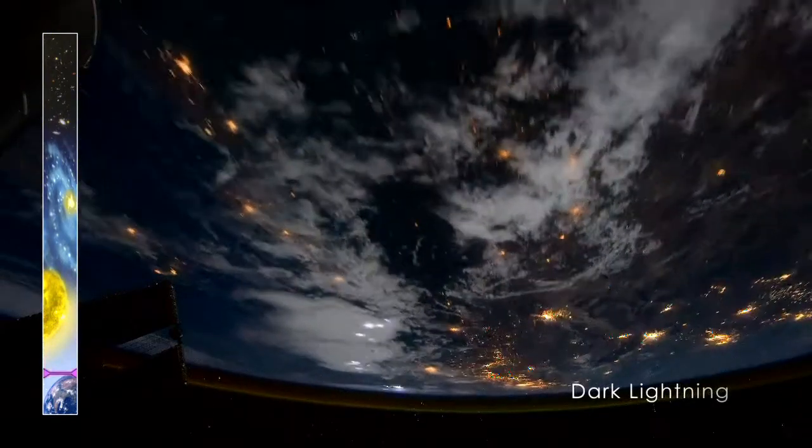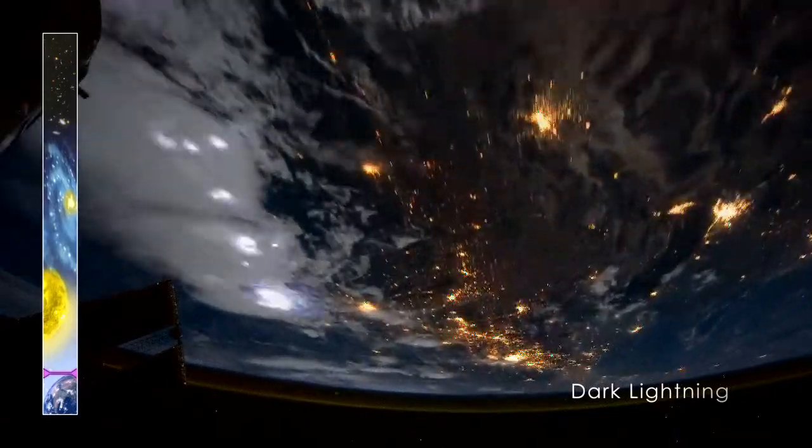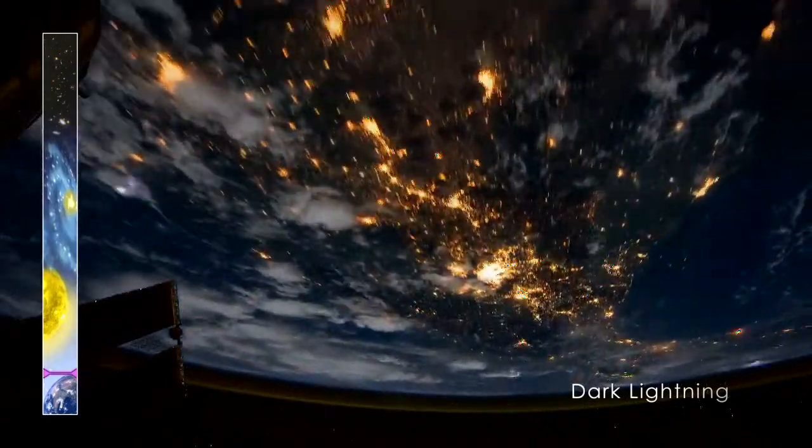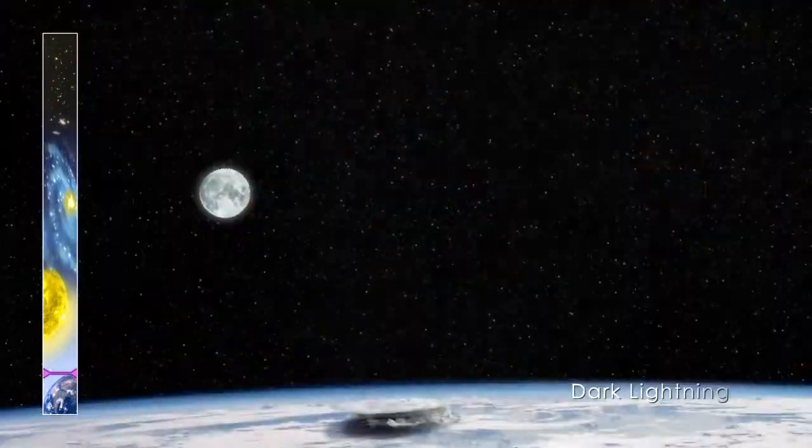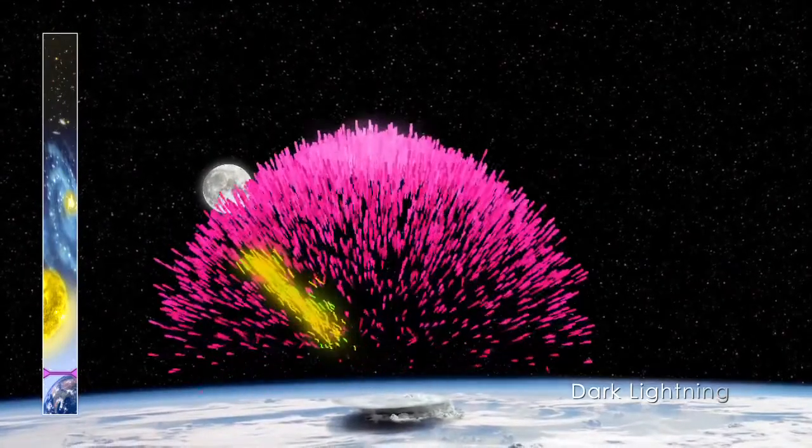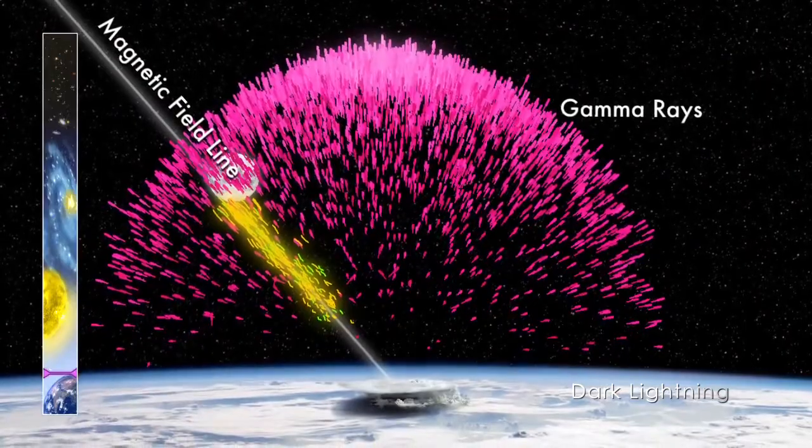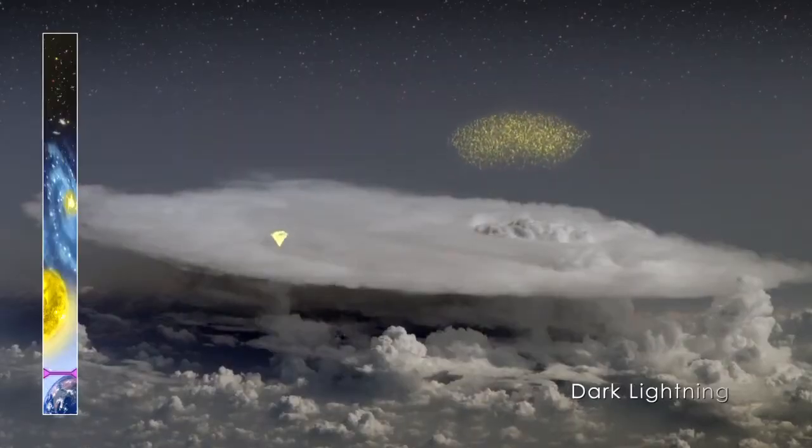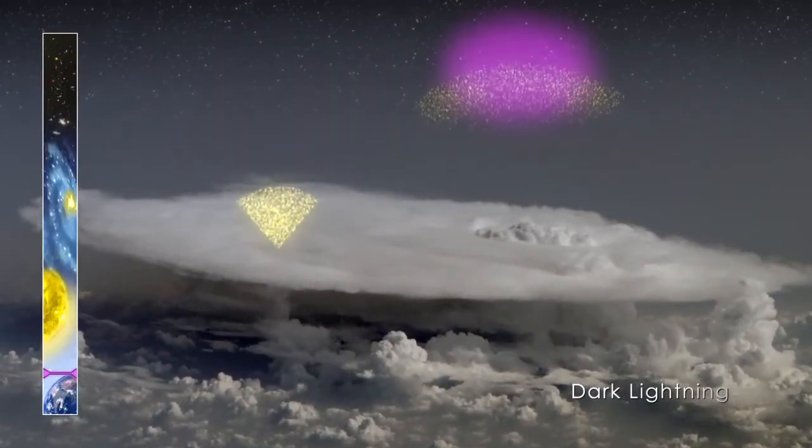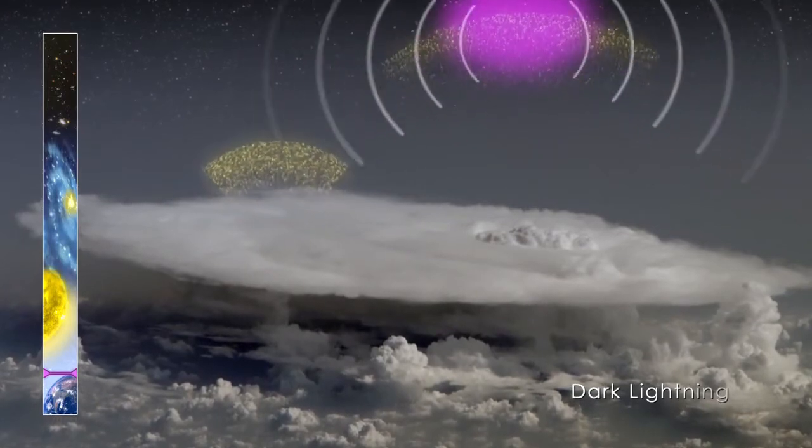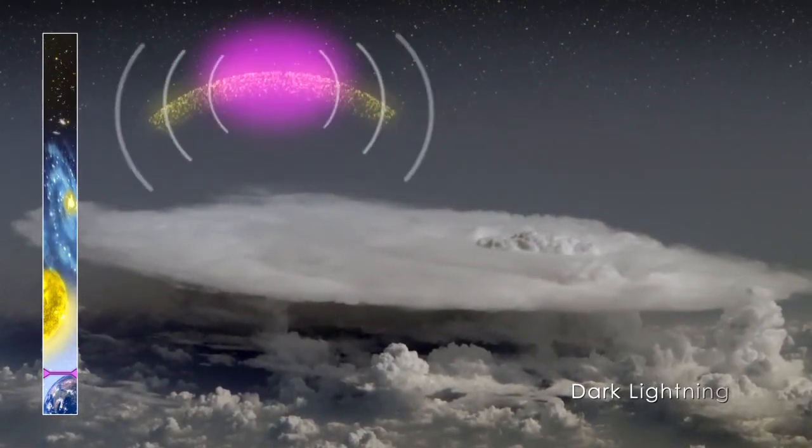New observations by NASA's Fermi Gamma-ray Space Telescope show that thunderstorms make antimatter. The process starts with a terrestrial gamma-ray flash, or TGF, an intense pulse of gamma rays originating from thunderstorms. Scientists have discovered that radio signals, once thought to be produced by the lightning that triggers a TGF, are in fact broadcast by TGFs themselves.